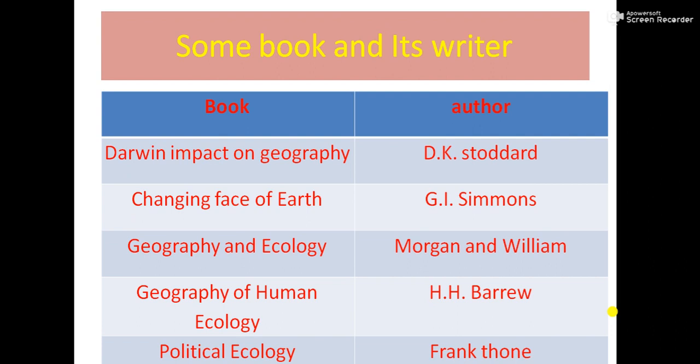There has been some book names and its writers. First book name is Darwin Impact on Geography and the writer is D.K. Stoddard. Second book name is Changing Face of Earth and the writer is G.I. Simmons. Third book name is Geography and Ecology, the writers Morgan and William.